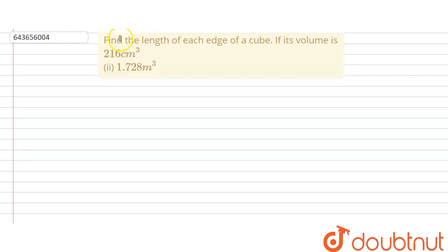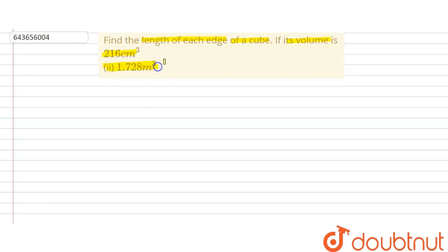Hello students, the problem is: find the length of each edge of a cube if its volume is — first part: 216 centimeter cube, and second part: 1.728 meter cube.